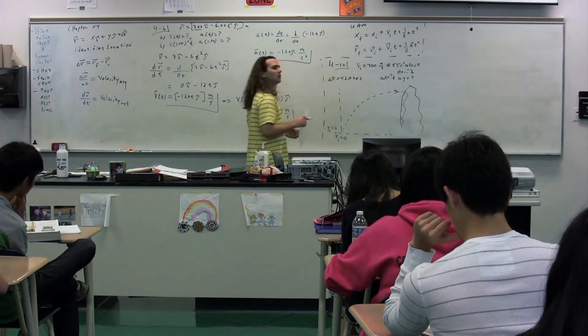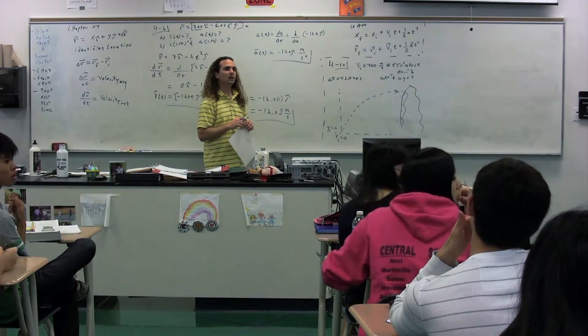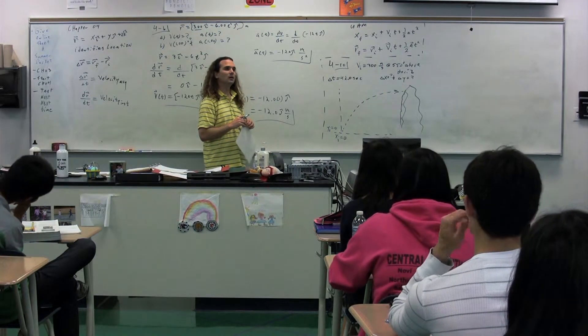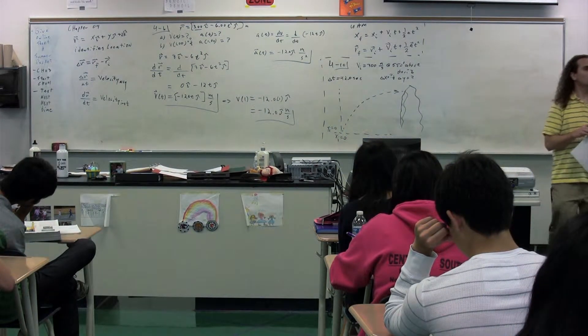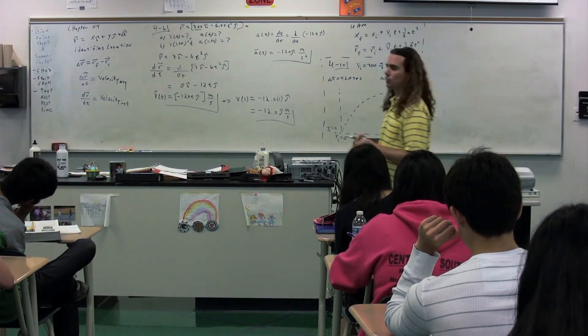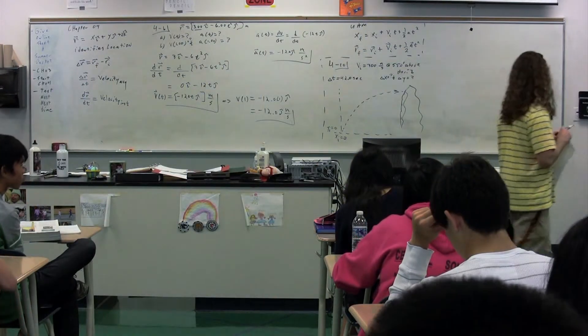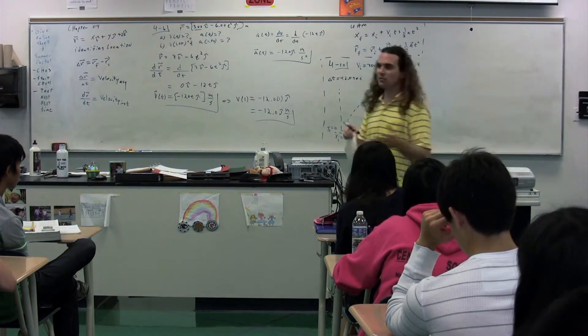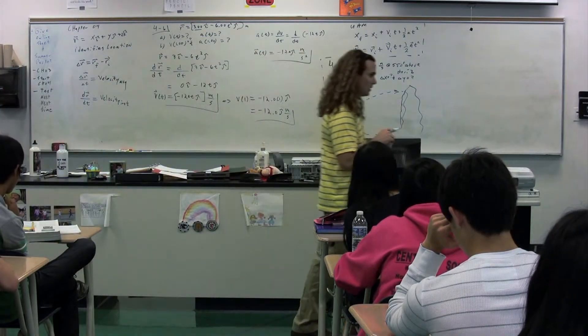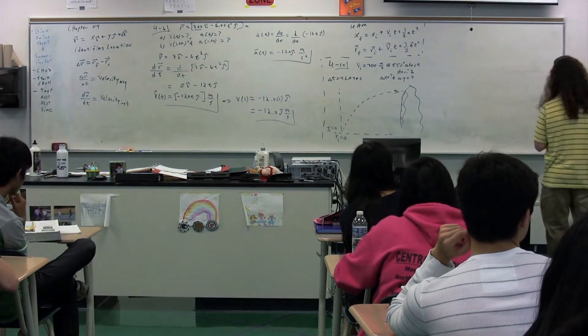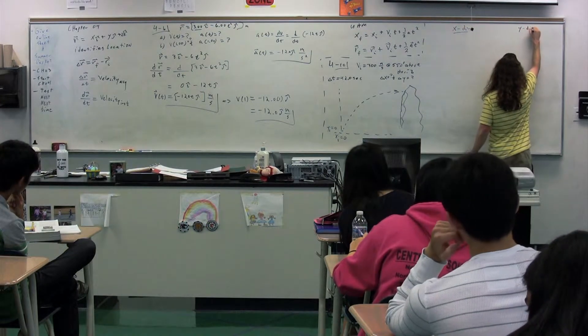It's a projectile motion problem, so we're just solving this. What should we do first? We should solve for delta y. Right. We need to do stuff. I agree we need to solve for delta y, but we need to do stuff before we can really even begin working with this. What do we need to do first, Carol?